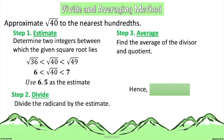For step 2, we divide the radicand by the estimate. The radicand from the given is 40, and the estimated number from step 1 is 6.5. So 40 divided by 6.5 is equal to 6.50. Always remember to round off your answer to the nearest hundredths.